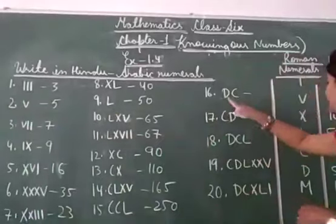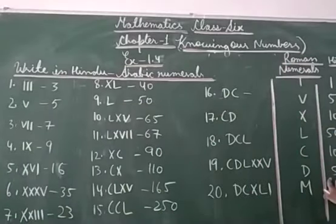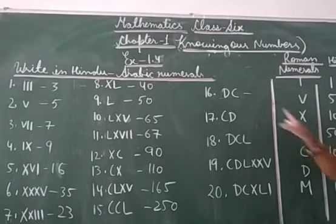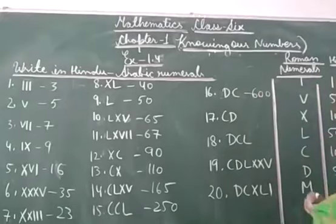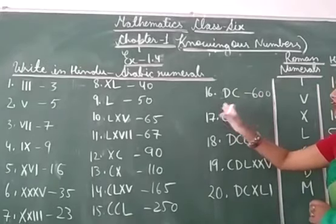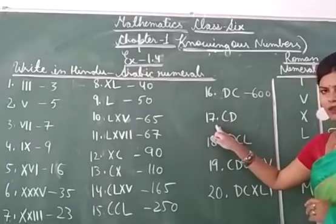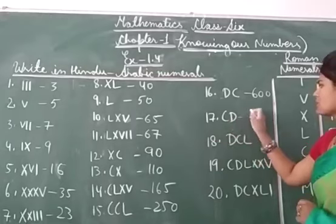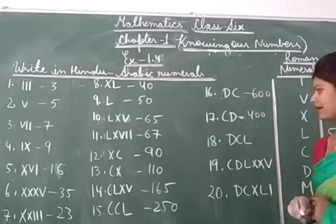Next is DC. D is the symbol of 500 and C is the symbol of 100, so 500 plus 100 is 600. And CD: C and D, we have to subtract 100 from 500, so we get 400.